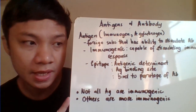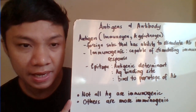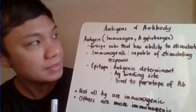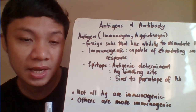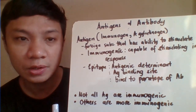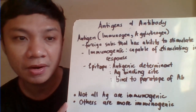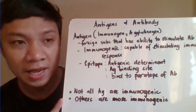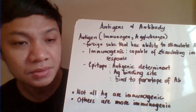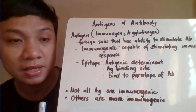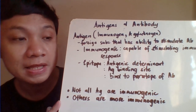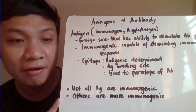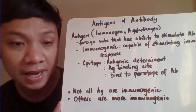Today we'll discuss antigens and antibodies. An antigen, also called an immunogen or agglutinogen, is a foreign substance that can stimulate our immune response. Antigens can come from microbial or non-microbial organisms that enter the body of the host. The entry of an antigen stimulates the immune response, which results in antibody production.